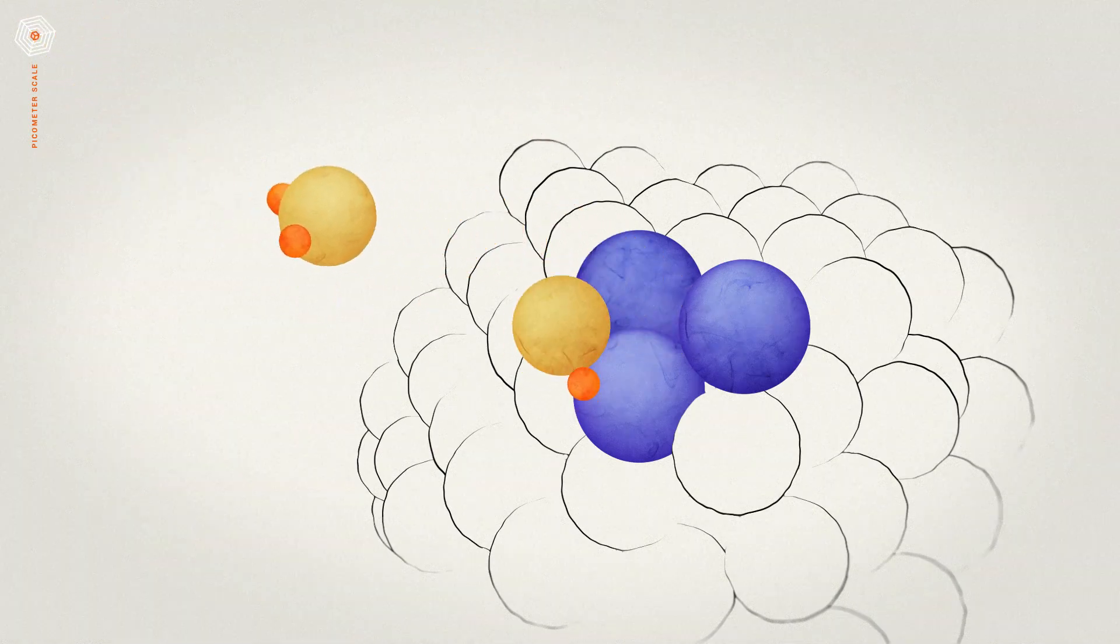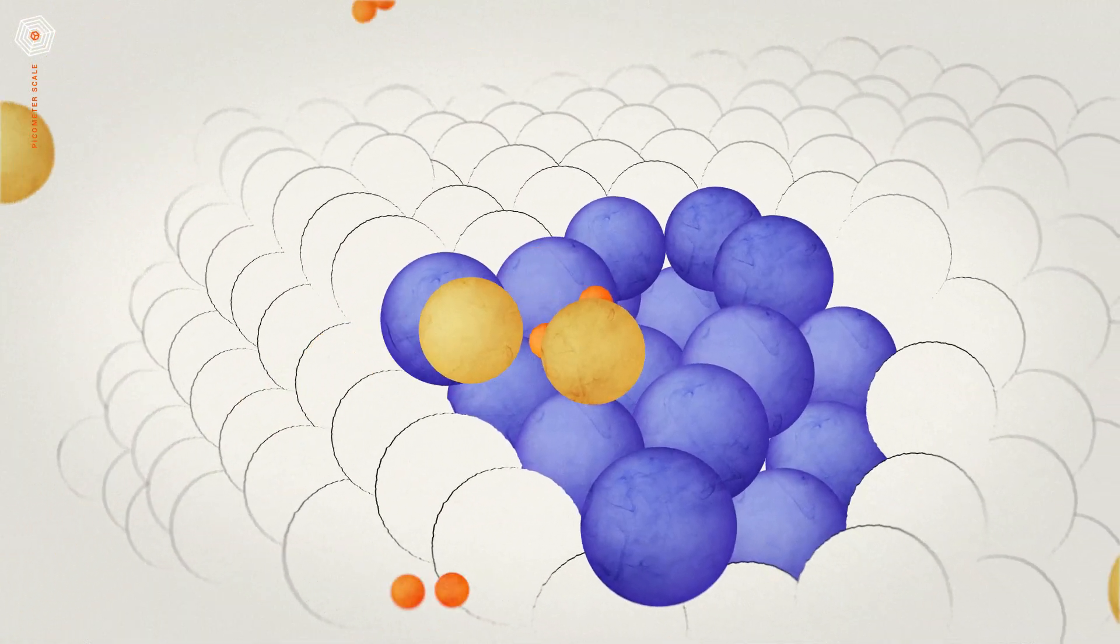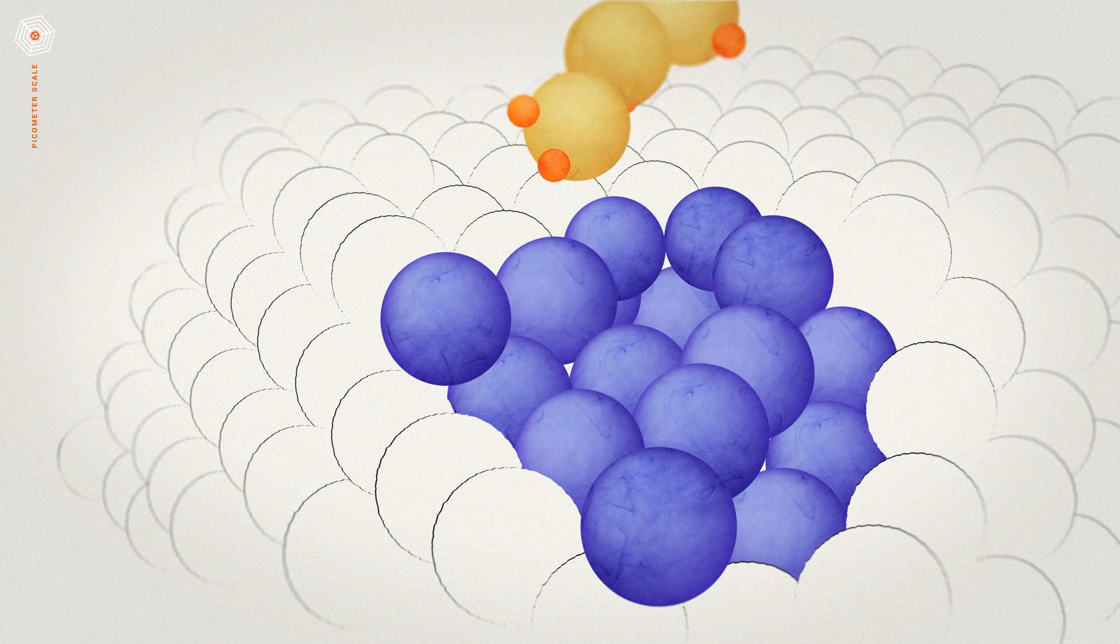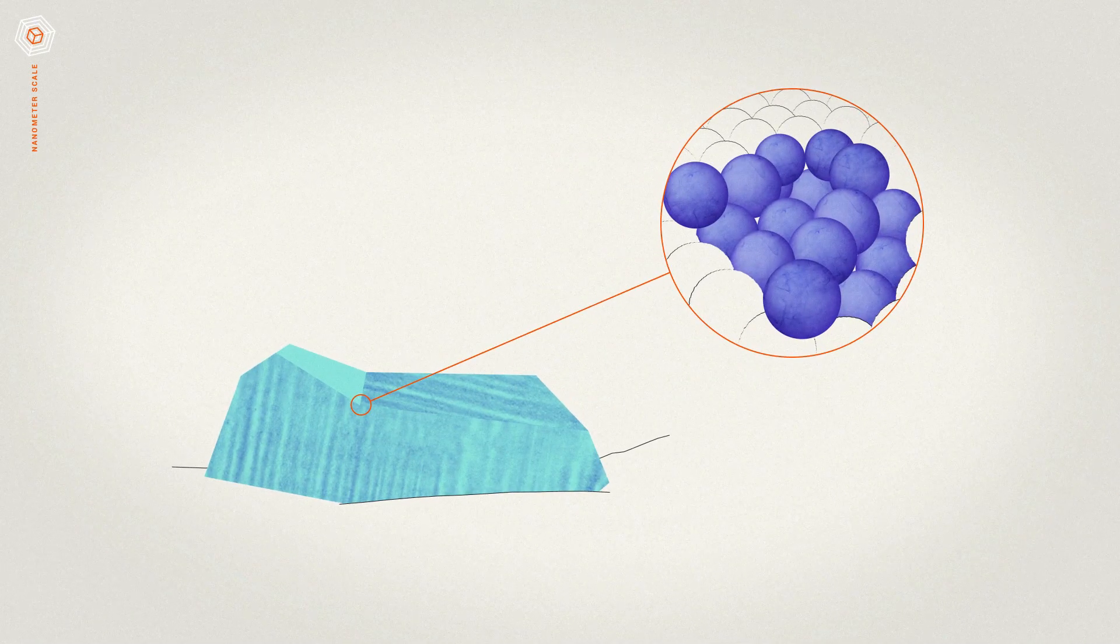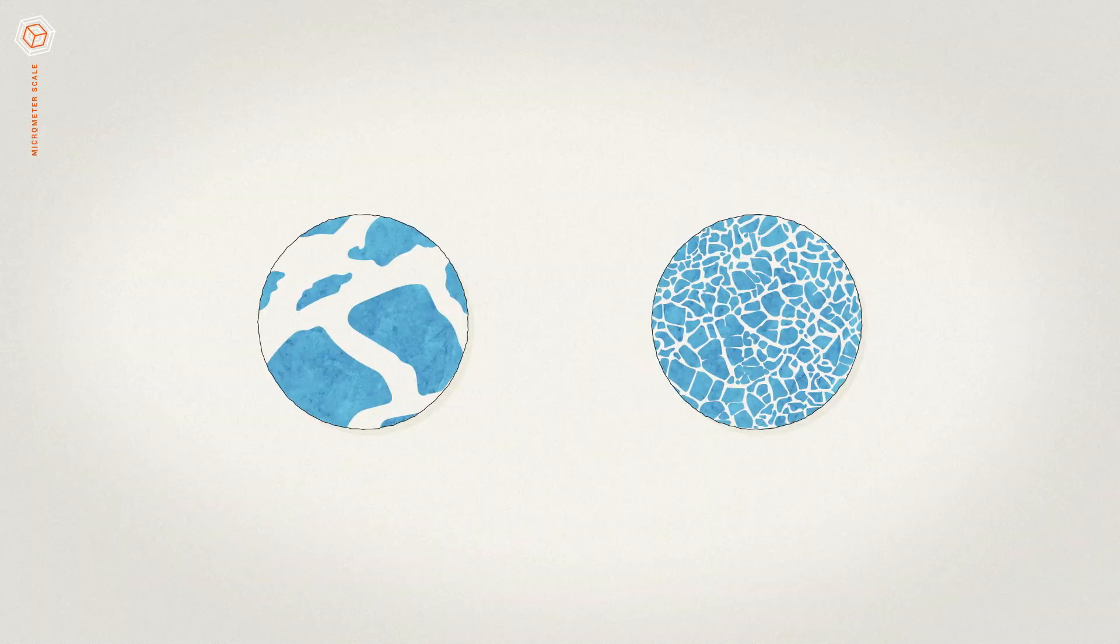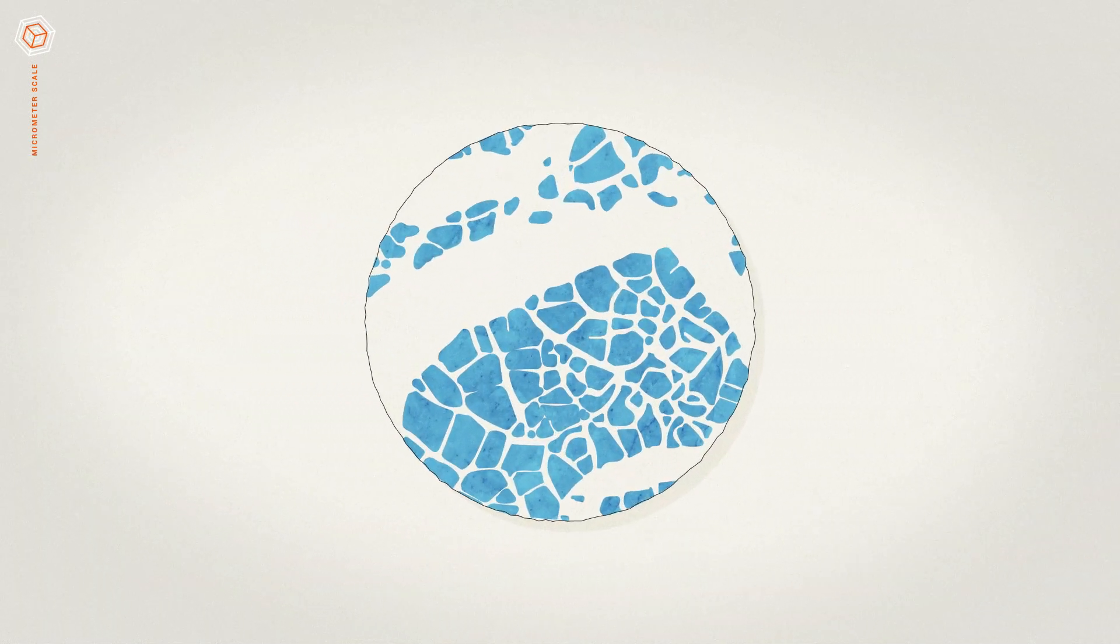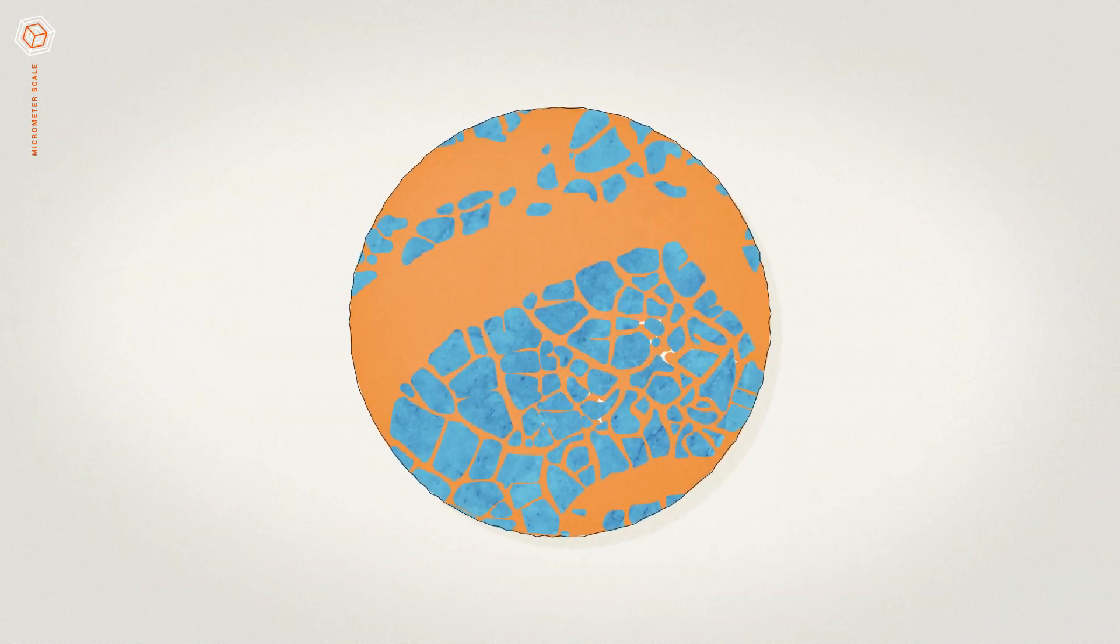The active sites need to have the right shape, as this determines the chemical reaction that's catalyzed. The nanoparticles have to be the right size for the active sites to have the right shape, and the pellets need to have the right pore structure for optimal use of the nanoparticles.